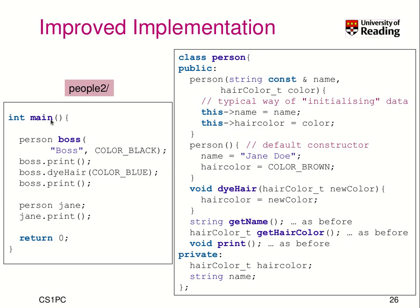Let's look at how this is implemented and used. We instantiate boss, specifying the name and color black initially. Then we say dye hair color blue and print it. We can have another person, Jane, and print Jane. Here it's a simplified code where we remove NHS because it didn't fit on the slide, but it's trivial to implement.